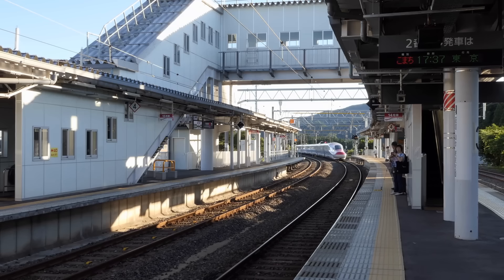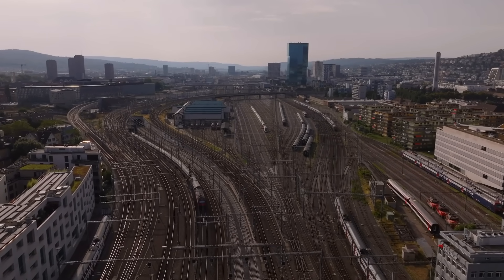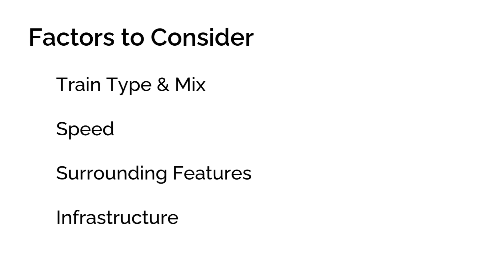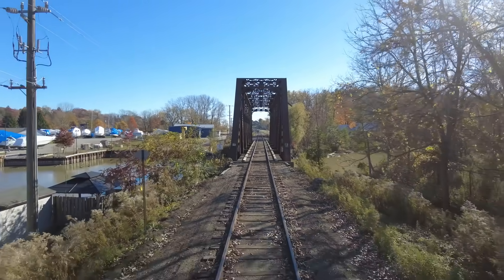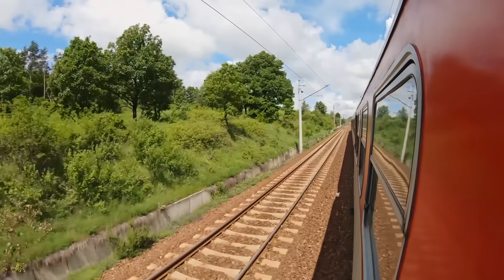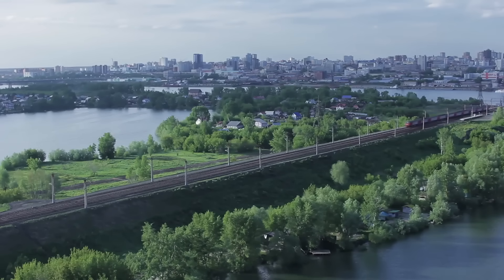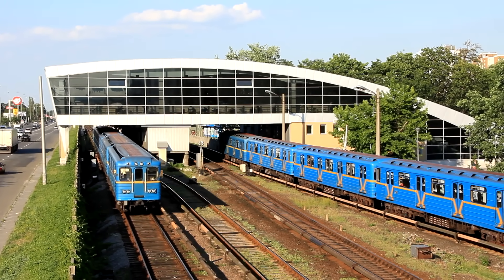Then come the surrounding features — nearby platforms, junctions, turnouts, or signals that cause frequent stopping. These can all limit how fast a train enters or exits the curve, affecting the optimal cant value. You also need to think about the infrastructure itself: is this a new layout or an upgrade? Can the track bed and ballast handle the increased lateral loads from higher cant deficiency? All these considerations feed into your decision. It's a balance between what's theoretically ideal and what's operationally practical. Tools like TrackX and other simulation software help a lot, but ultimately experience and engineering judgement carry a lot of weight.